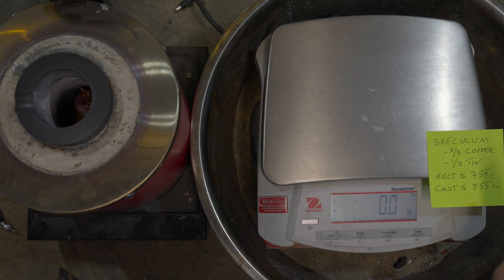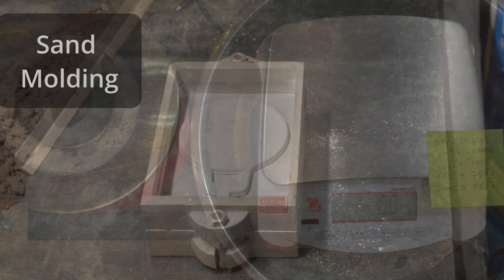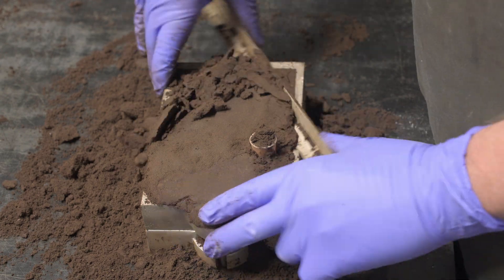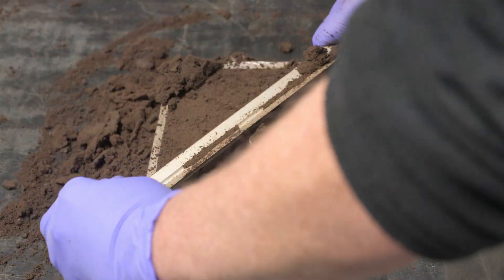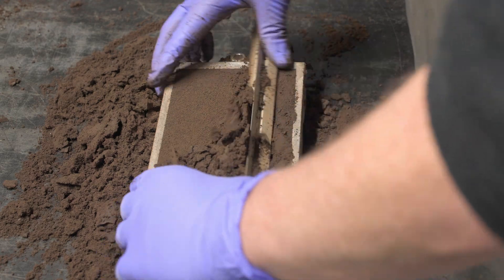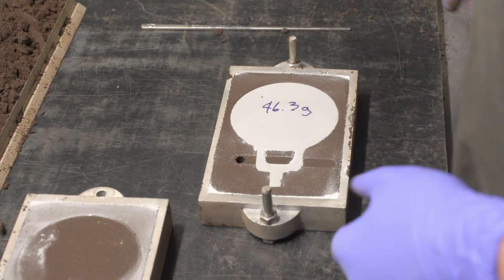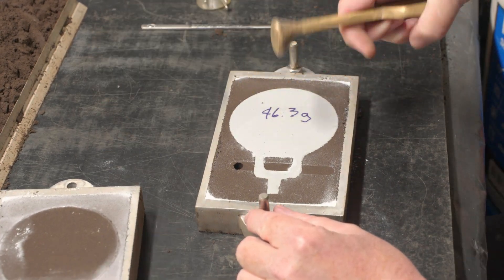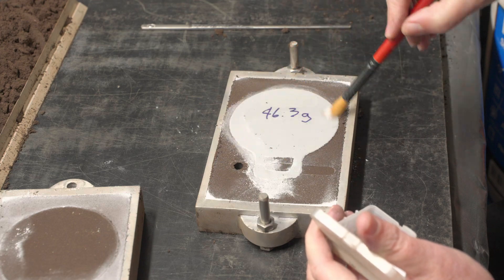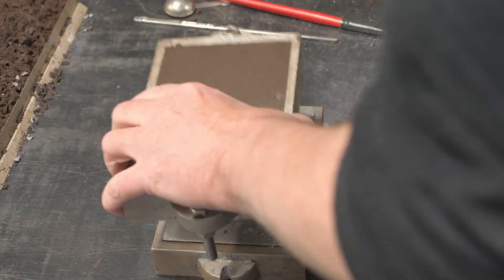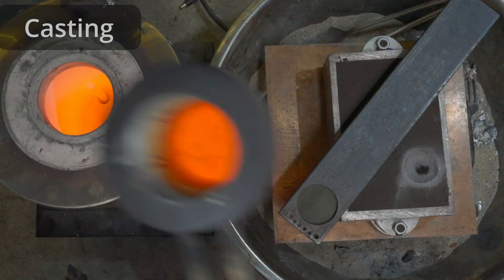And we're going to heat it up to about 855 degrees centigrade for its pour. This alloy should melt around 755. Here we go, so here we go. Let's see how we go.